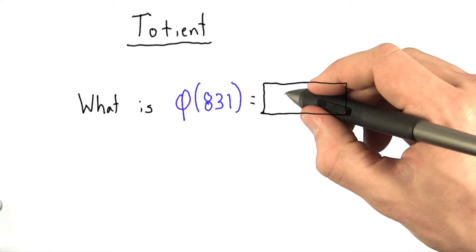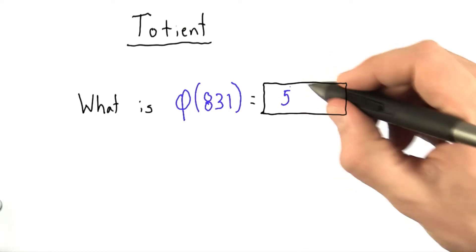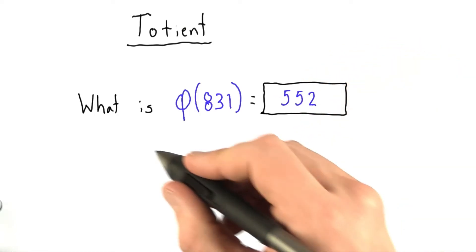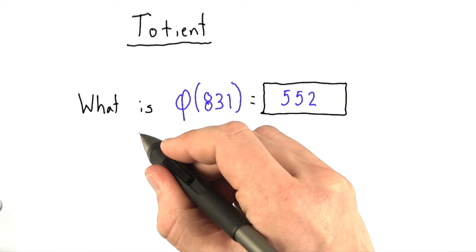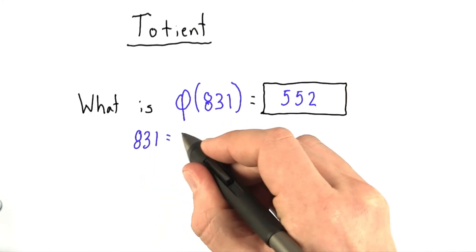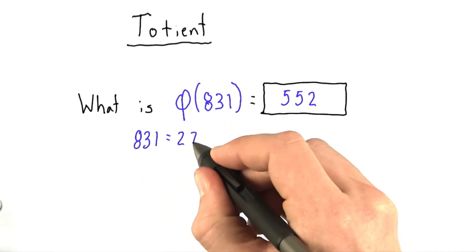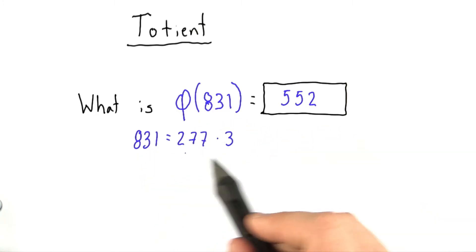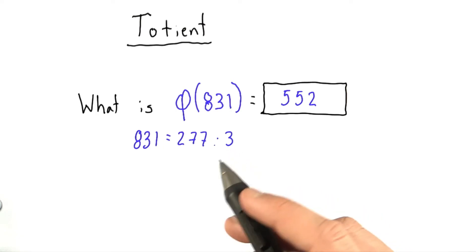The totient of 831 equals 552. We can calculate this by seeing that 831 equals 277 times 3, and 277 and 3 are both prime.